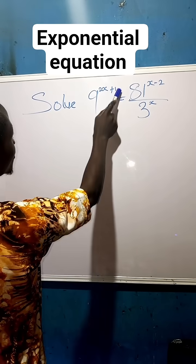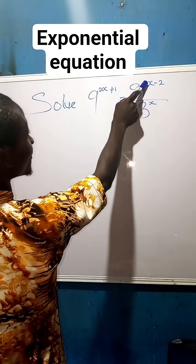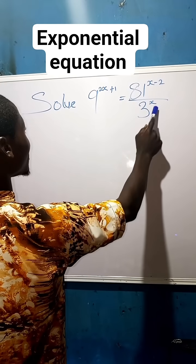9 raised to the power of 2x plus 1 equals 81 raised to the power of x minus 2, all over 3 raised to the power of x.